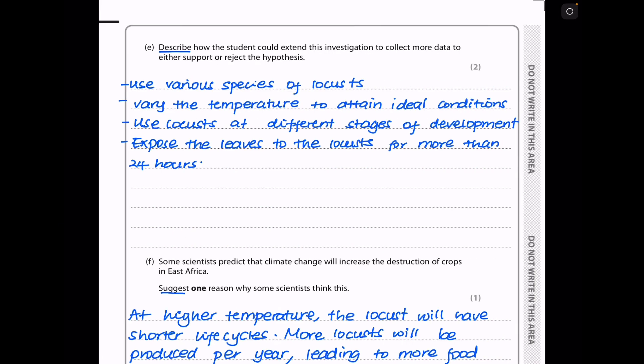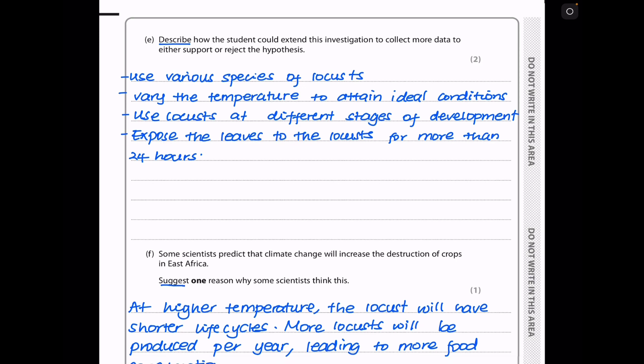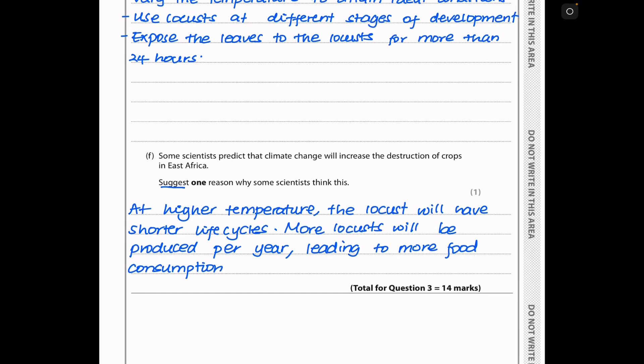In part E, they want you to describe how the student could extend this investigation to collect more data to either support or reject the hypothesis. Like I said previously, they could use various species of locusts. They could vary the temperature to obtain ideal conditions. They could use locusts at different stages in development. And they could expose the leaves to the locusts for more than 24 hours. That will give better results. In part F, some scientists predict that climate change will increase the destruction of crops in East Africa. So just one reason why some scientists think this. Climate change is mainly due to the increase in temperatures. So at high temperatures, the locusts will have shorter life cycles. And that means we'll have more cycles of locusts per year. And more food will have to be consumed. So this brings us to the end of question 3.